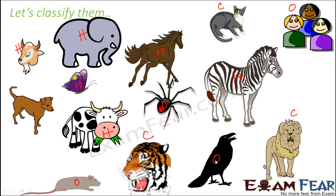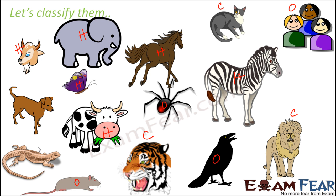A crow is an omnivore because it feeds on filth, dead animals, as well as plant parts. Lizards vary — most house lizards are carnivores, eating mosquitoes or other flies, but some varieties of lizards are pure herbivores and eat only plants.